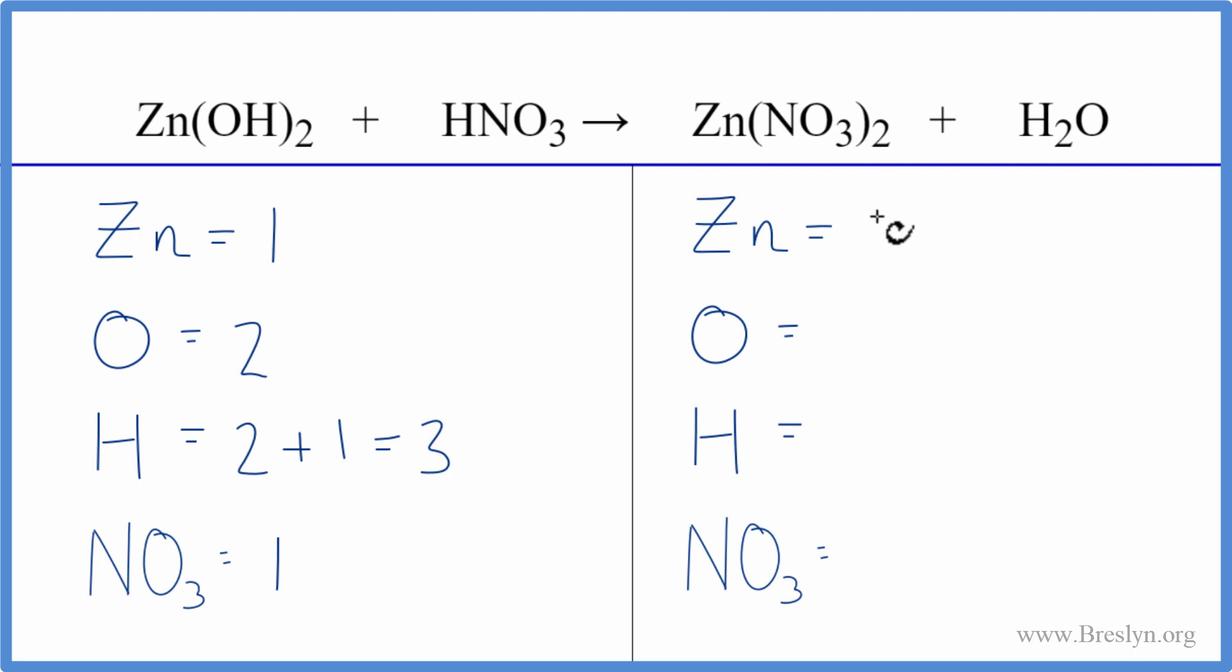On the product side, we have one zinc. We have just the one oxygen, two hydrogens, and two times the one nitrate, so two nitrates.